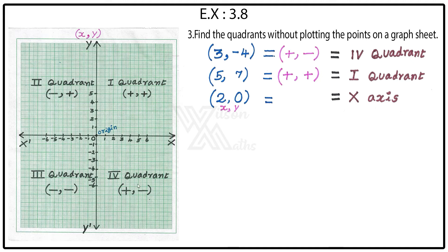Plus comma minus is the fourth quadrant. So (3, -4) is in the fourth quadrant. Second point: 5 comma 7. 5 is positive, 7 is also positive, so plus comma plus. Where does it come? Plus comma plus is the first quadrant. So (5, 7) is in the first quadrant.